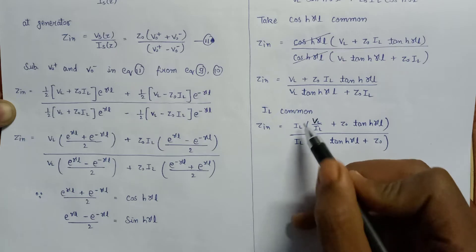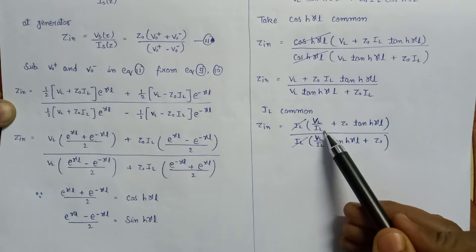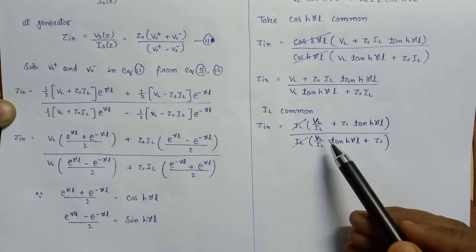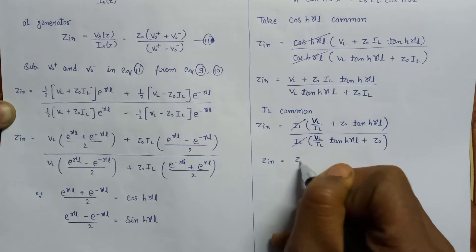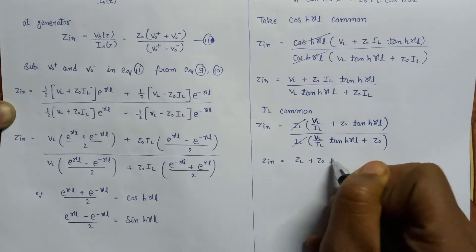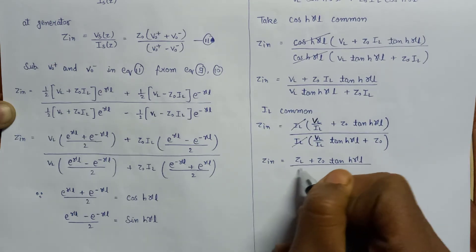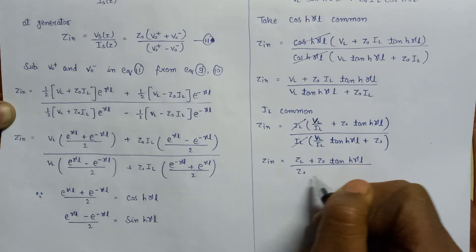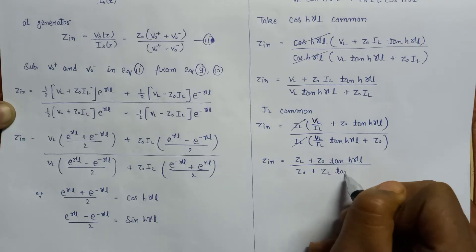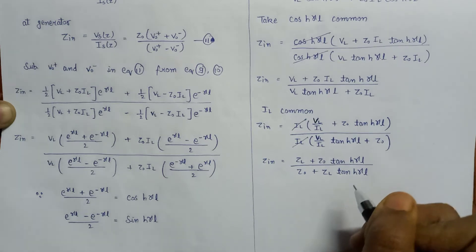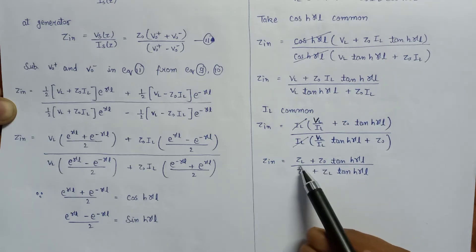Now this I_L will get cancelled out with the other I_L, and since V over I is nothing but impedance denoted by Z, our input impedance Z_in will be equals to Z_L plus Z_naught times tanh(γl) over Z_naught plus Z_L times tanh(γl). This is the expression of input impedance in terms of characteristic impedance and load impedance.